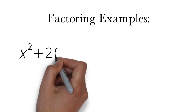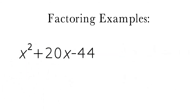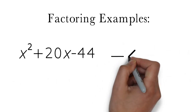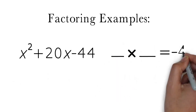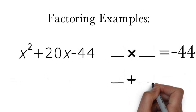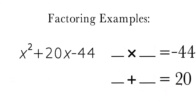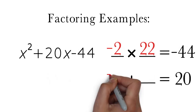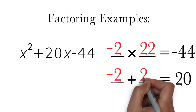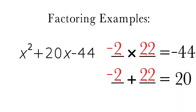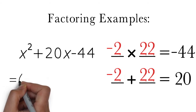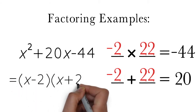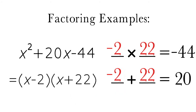For the next example, consider the trinomial x squared plus 20x minus 44. In order to factor this, we need to find two numbers that multiply to negative 44 and add up to 20. The numbers that do this are negative 2 and positive 22. Thus, we can factor x squared plus 20x minus 44 as a product of the binomials x minus 2 and x plus 22.